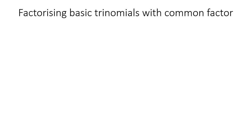So when you get a question on a trinomial, for example maybe it goes 2x squared take away 4x take away 6, before you even start thinking about making brackets and all of that, I always, whenever you're doing any type of factoring or factorizing, always think about: is there a common factor that you can take out? That is step one of any factorizing.